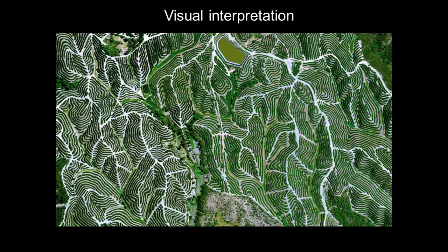Traditional classification of vegetation by remote sensing has entailed the visual interpretation of aerial photographs. Recognition of target is the key to interpretation and information extraction. Observing the difference between targets and their backgrounds involves comparing different targets based on any or all of the visual elements: tone, shade, size, pattern, texture, shadows, and association. Visual interpretation using these elements is often a part of our daily lives, whether or not we are conscious about it.